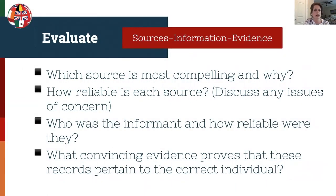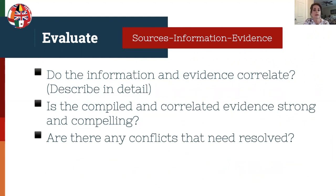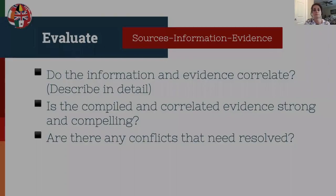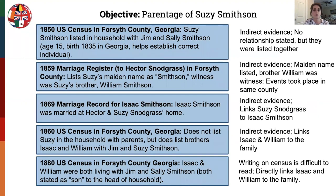Here are a few questions to ask yourself as you evaluate the source's information and evidence: Which source is the most compelling and why? How reliable is each source, and be sure to discuss any issues of concern. Who was the informant and how reliable were they? When convincing evidence proves that these records pertain to the correct individual, do the information and evidence correlate? Is the compiled and correlated evidence strong and compelling? Are there any conflicts that need to be resolved? Here's a list of sources proving the parentage of Susie Smithson — much of the evidence is indirect and needs to be explained thoroughly. Note they're in a logical format to clearly lay out the proof, simplified here for presentation purposes.